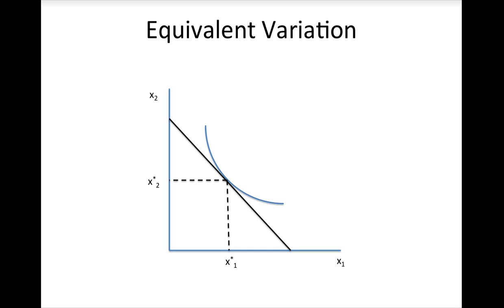The other way to measure consumer surplus is using equivalent variation. With compensating variation, we were paying the consumer after the price increase to bring them back to their original utility level. With equivalent variation, we are doing the opposite. We are asking how much money would we have to take away from this consumer now in order to make him or her as worse off as they will be after the price change.